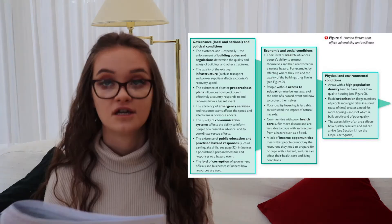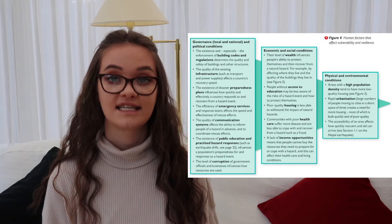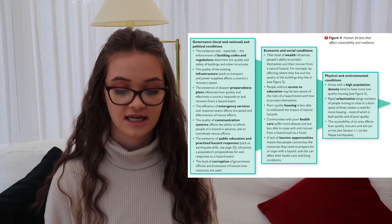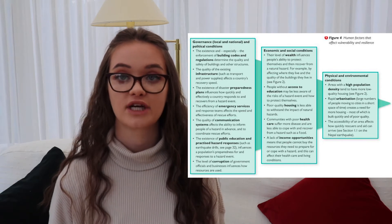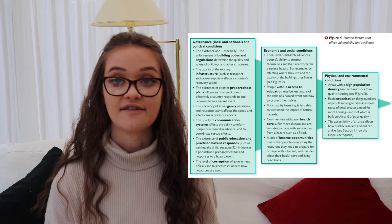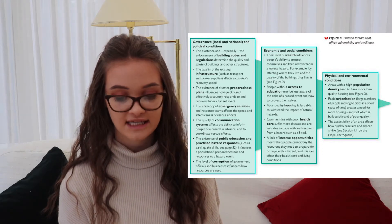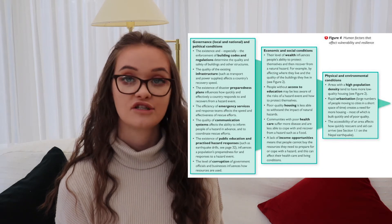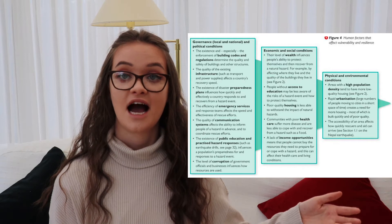This next section covers different human factors that can affect a country's vulnerability and resilience. The first human factor is governance — local, national and political conditions. The existence and enforcement of building codes and regulations determine the quality and safety of buildings and other structures. The quality of existing infrastructure affects how quickly a country can recover. Disaster preparedness plans, the efficiency of emergency services, communication systems, and public education on hazard responses all influence a population's readiness. The level of corruption in government also greatly affects how resources are used and therefore how quickly a country can recover.